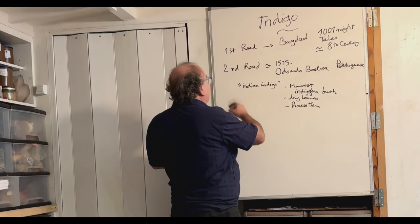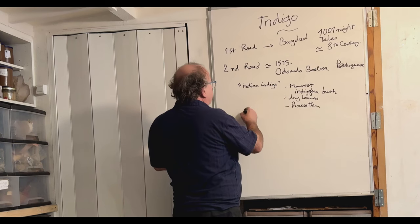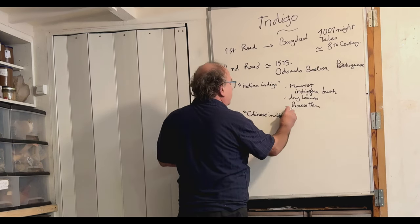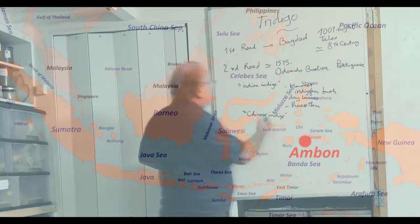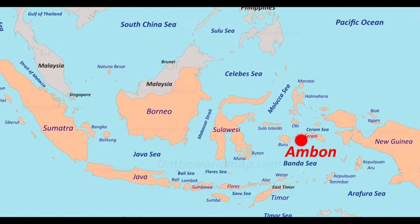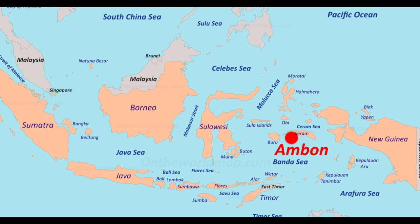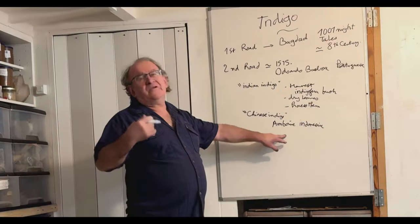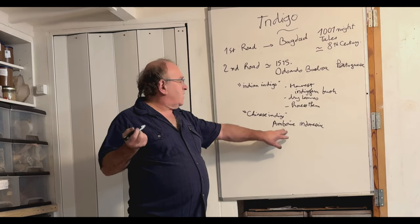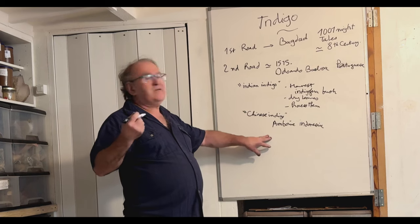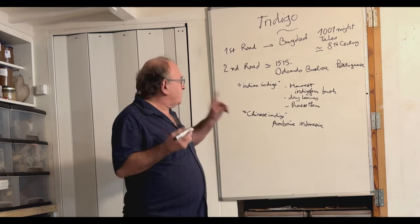But later, the Spanish people, so that was the second, I would call it Chinese. The Spanish people came to Indonesian islands, which is Amboina, Indonesia. And this was territory occupied by Chinese. And in Indonesia, in Amboina, during the 16th century, the Chinese were processing indigo differently. They were using fresh leaves.